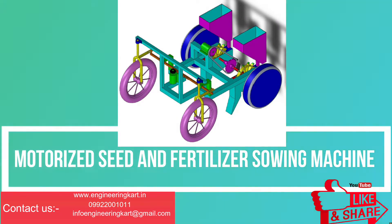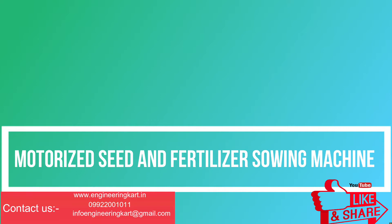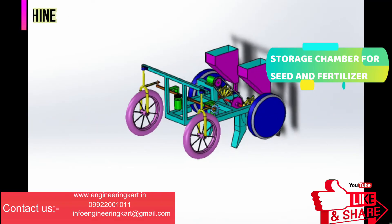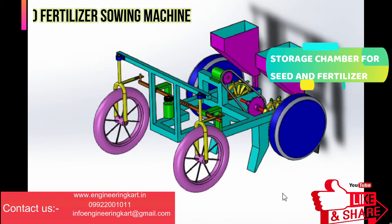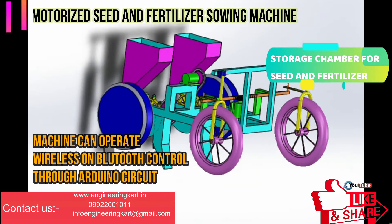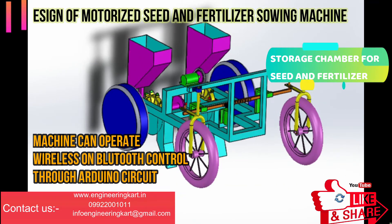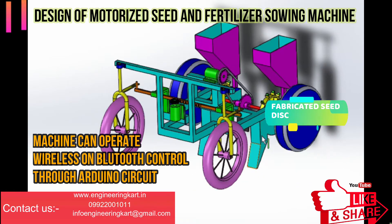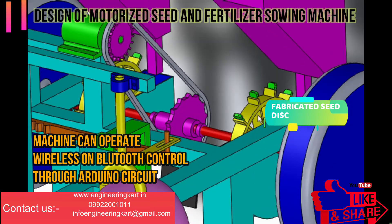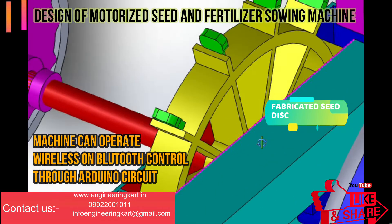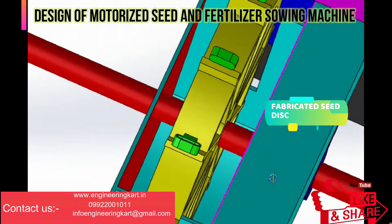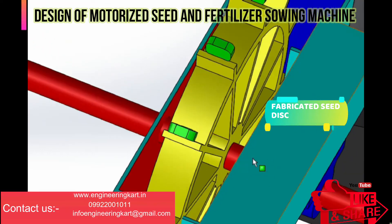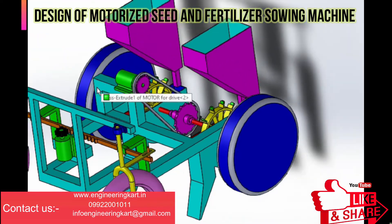In this video we will see the technical project on seed and fertilizer sowing machine. In the developed model, there are two storage chambers provided. The farmer can choose the chamber for seed or fertilizer according to his requirement. This machine can be operated remotely using Bluetooth, which controls the Arduino circuit. On the same shaft, the fabricated seed discs are mounted, and the seed buckets are screwed on.